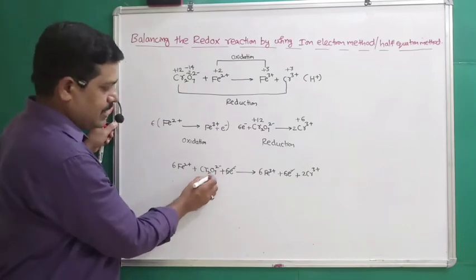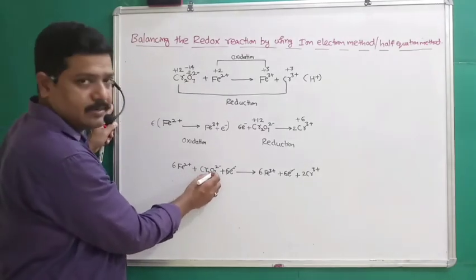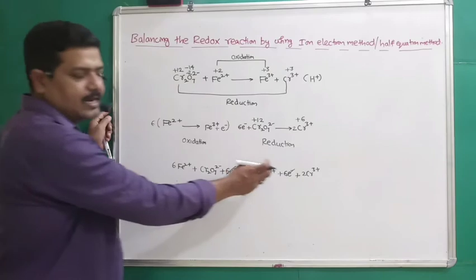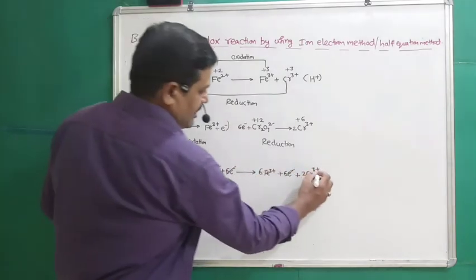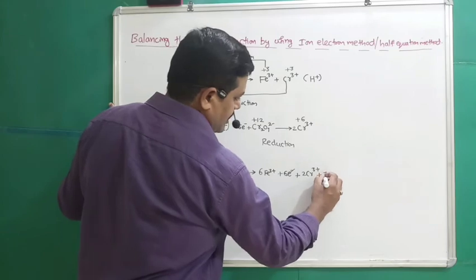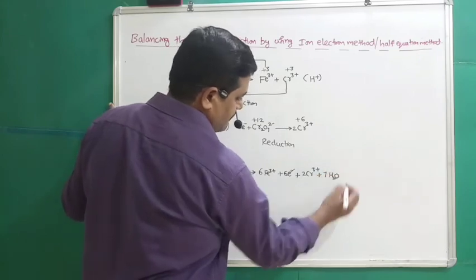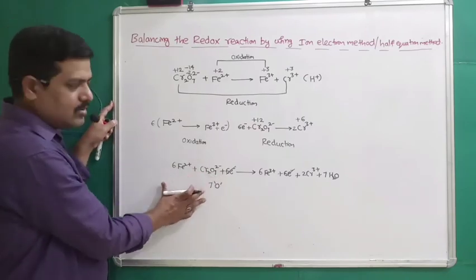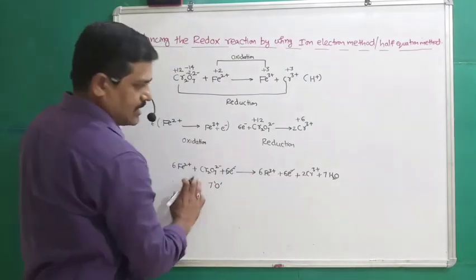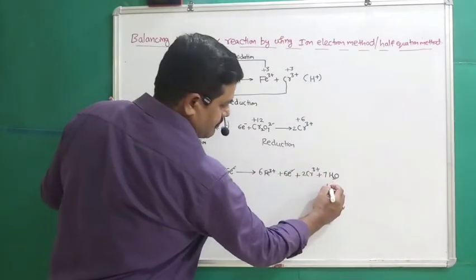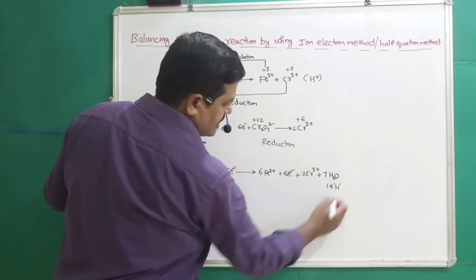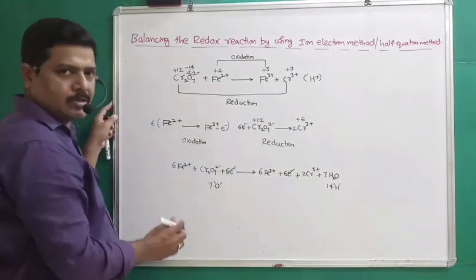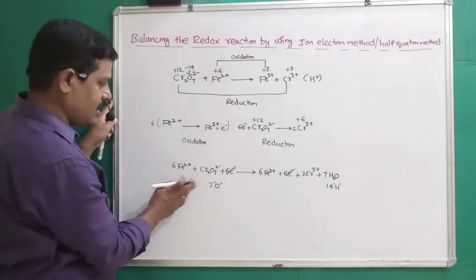Now we balance the oxygen atoms. There are 7 oxygen atoms in Cr₂O₇²⁻ on the reactant side and none on the product side. We add 7 H₂O molecules to the product side. To balance the 14 hydrogen atoms introduced, and since there are no hydrogens on the reactant side and the reaction is in acidic medium, we add 14 H⁺ to the reactant side.